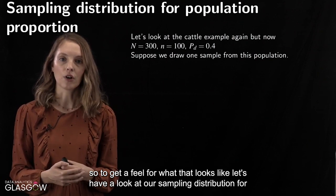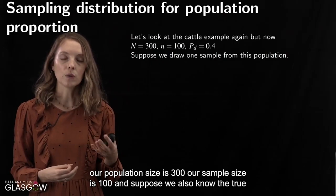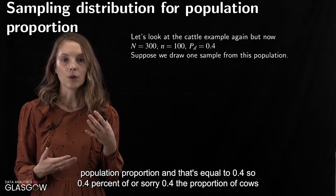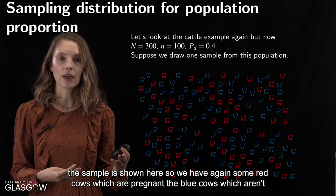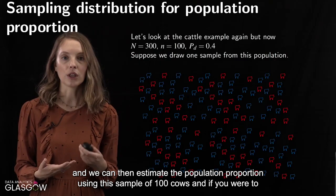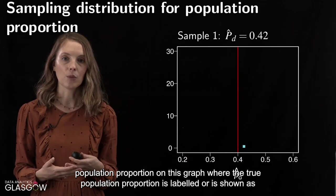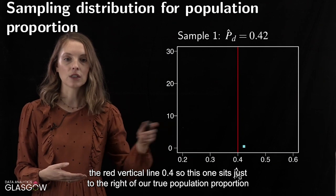Going back to our cattle example, suppose our population size is 300, our sample size is 100, and we know the true population proportion is 0.4 — meaning 40% of cows on the farm are pregnant. If we draw one sample of 100 cows — shown here with red (pregnant) and blue (not pregnant) — we can estimate the population proportion. For this first sample, we get an estimate of 0.42, plotted on the graph with the true proportion shown as the red vertical line at 0.4.